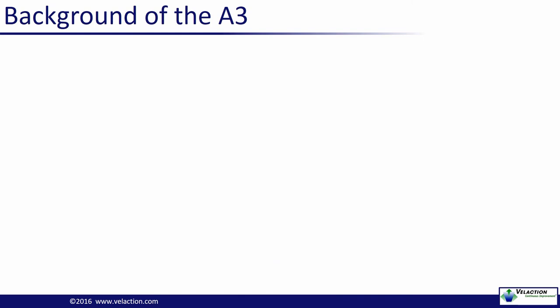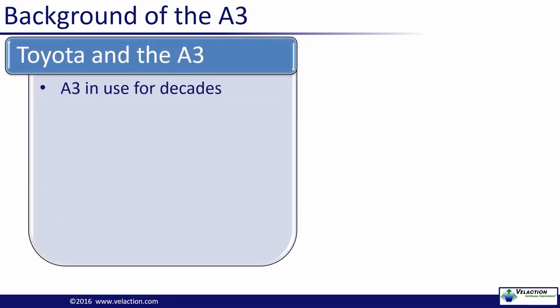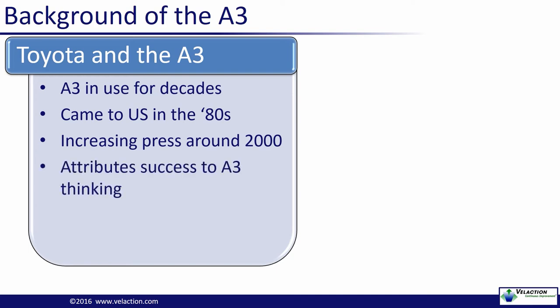Now that you have a better understanding of what an A3 Report is, let's talk a bit about where it came from. As you may know, Toyota is credited as the originator of the A3 Report. They have been using it for many years. And they brought it to North America when they started ramping up production there in the 1980s. Around the turn of the century, A3 Reports started getting more press and in the following years, interest in them steadily picked up steam. As the A3 process became more widespread, Toyota was dealing with some serious woes regarding the perception of its quality. But despite the short-term challenges it faced, it has had a rather long, uninterrupted run of success. Many people attribute its achievements to the A3 Report, or more accurately, to the A3 thinking behind the Report.